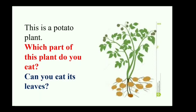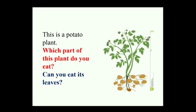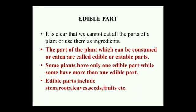I love potatoes! But I also need to understand what about the leaves and the other parts of the potato plant — why can't we eat them? We have come to a conclusion that we cannot eat all the parts of a plant or use them as our ingredients. Thus, the parts of the plant which can be consumed or eaten by us are called edible or eatable parts. Some plants have only one edible part, while some have more than one edible part. Edible parts of a plant include stem, roots, leaves, seeds, fruits, etc.